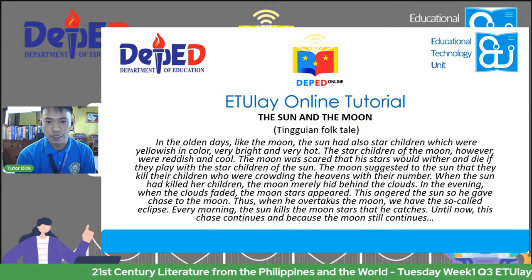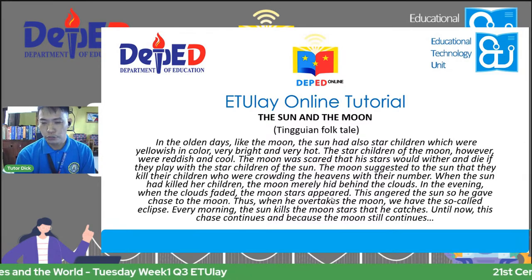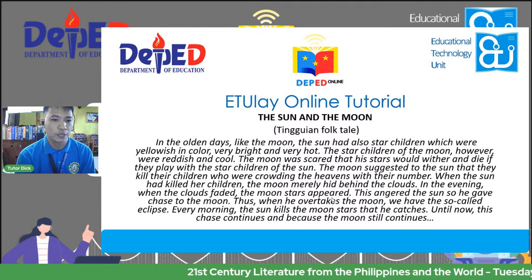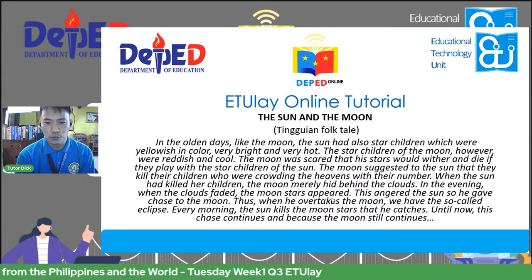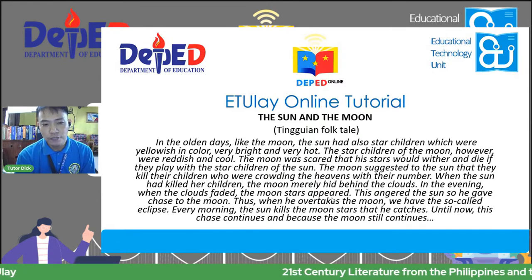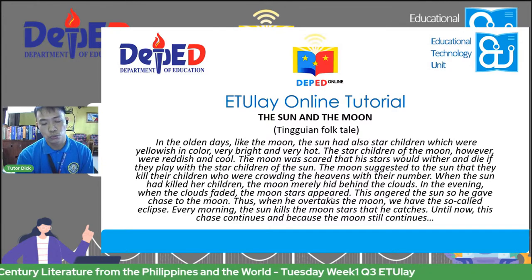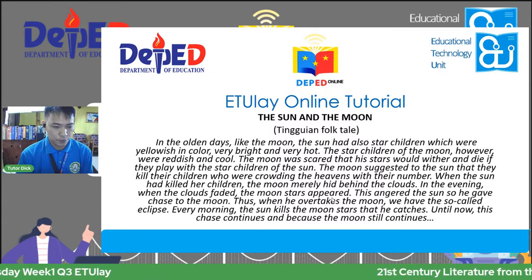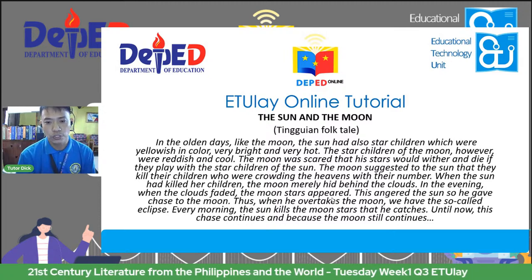In the olden days, like the moon, the sun had also star children, which were yellowish in color, very bright and very hot. The star children of the moon, however, were reddish and cool. The moon was scared that the stars would wither and die if they played with the star children of the sun. The moon suggested to the sun that they kill their children who are crowding the heavens with their number. When the sun had killed her children, the moon merely hid behind a cloud. In the evening, when the clouds faded, the moon stars appeared. This angered the sun, so it gave chase to the moon. Thus, when he overtakes the moon, we have the so-called eclipse. Every morning, the sun kills the moon star that he catches. Until now, this chase continues.